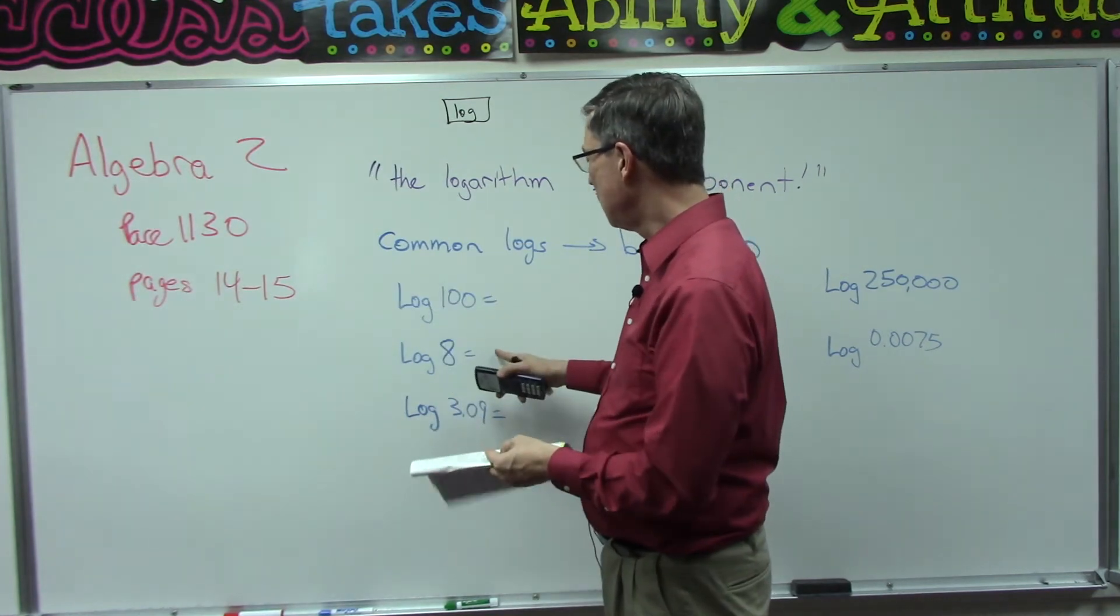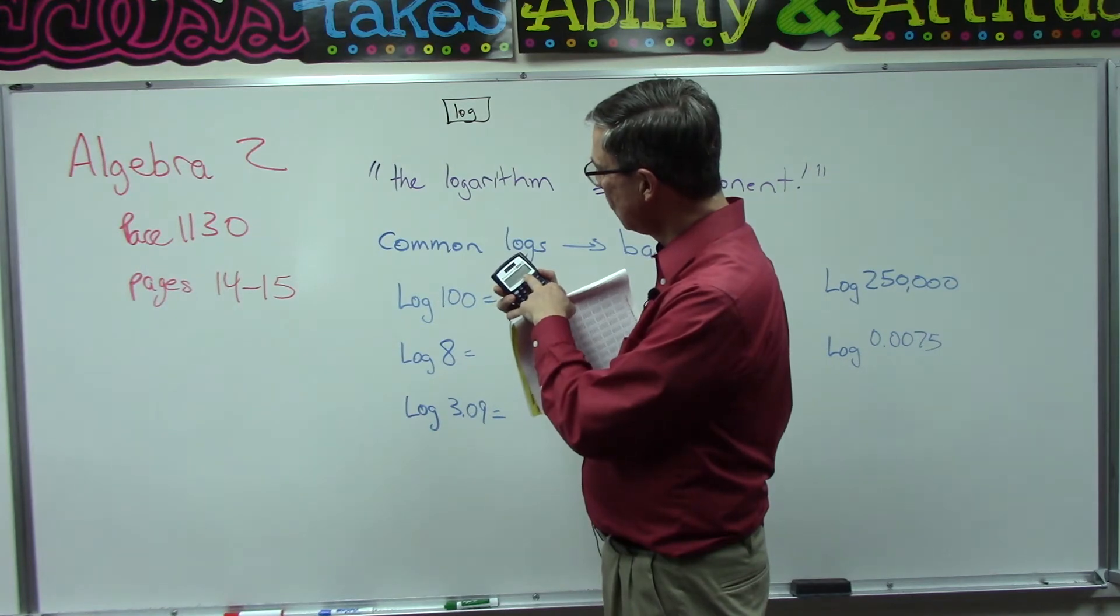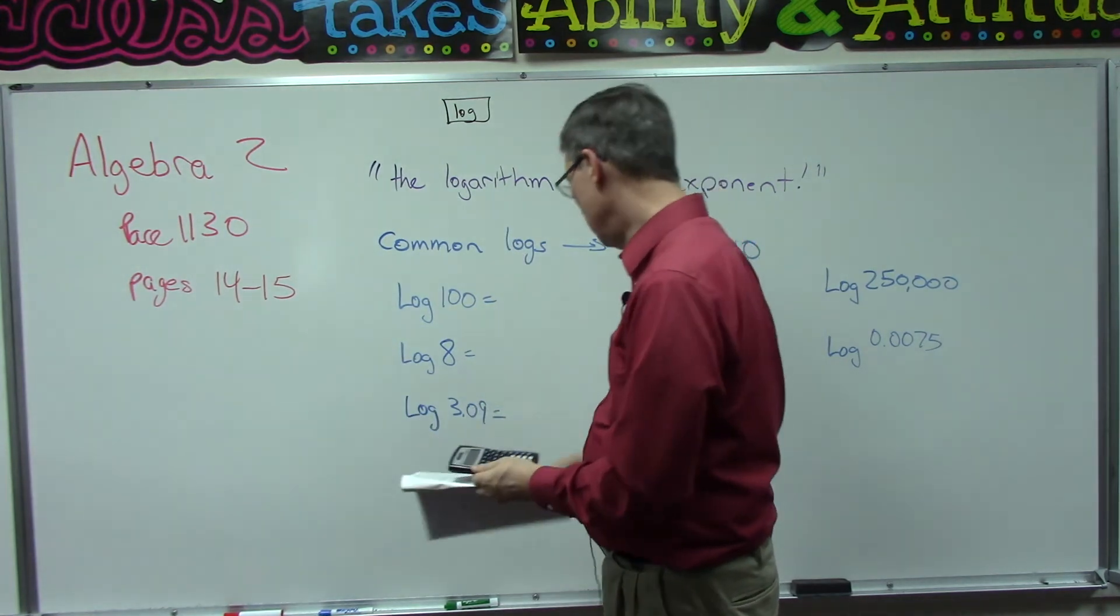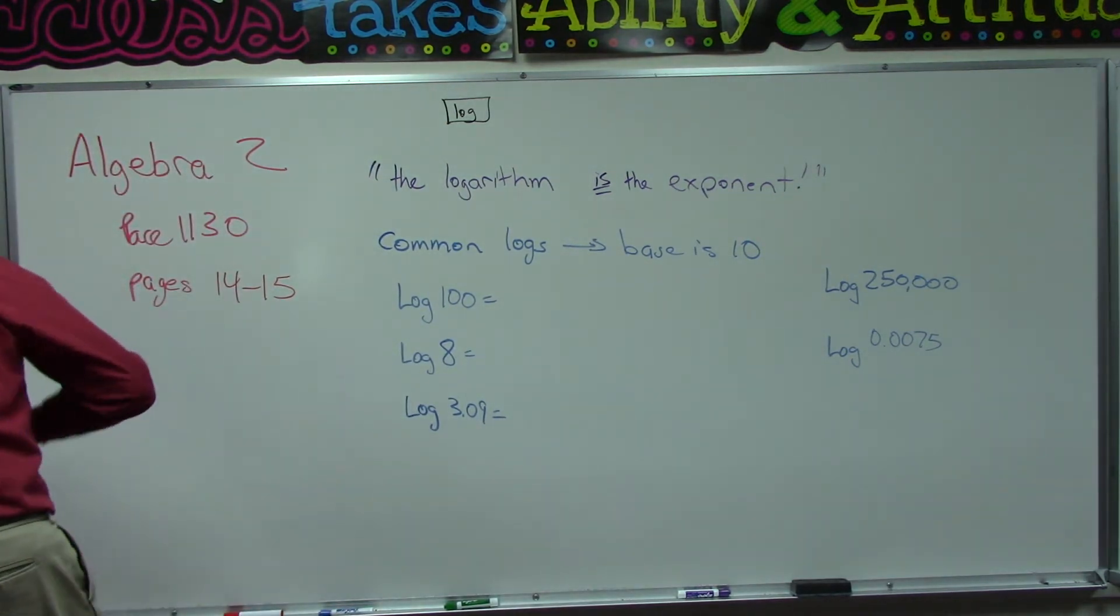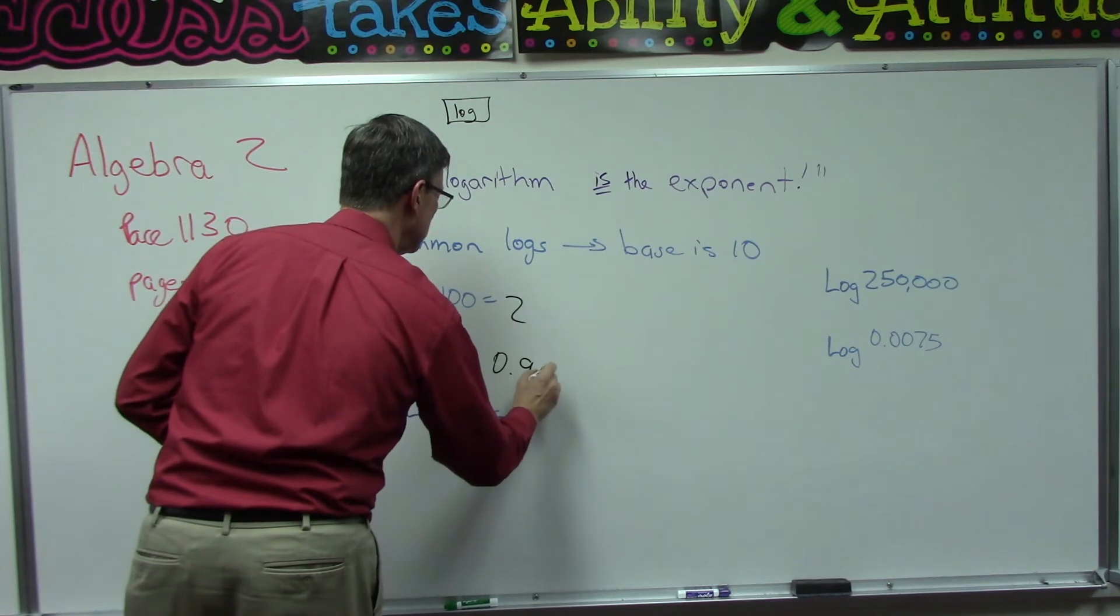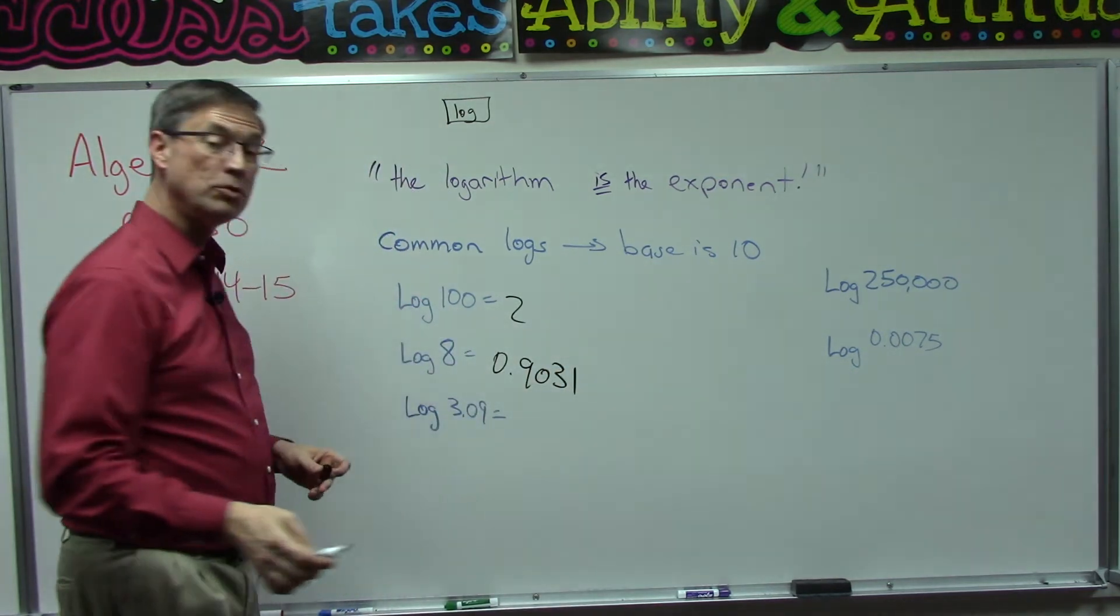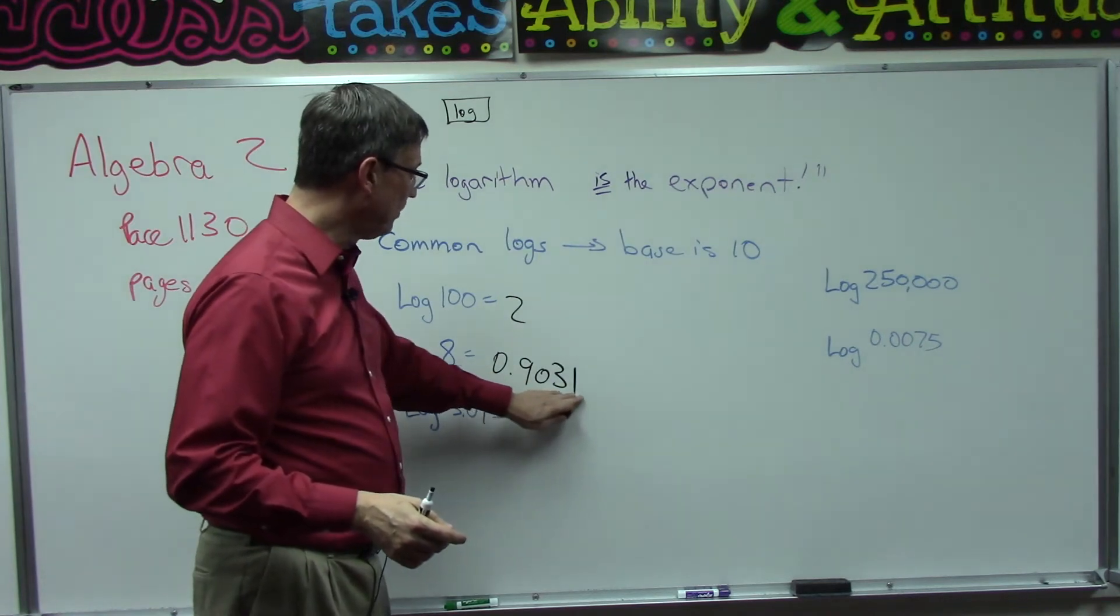So 0.9031. So check that on your calculator, make sure that you can round it to four places and you get that same thing.